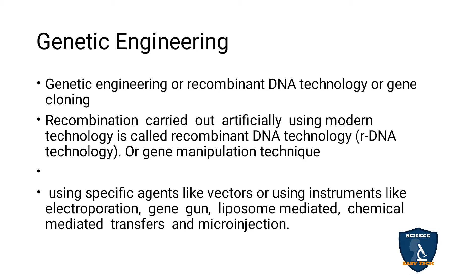How is rDNA technology done in the laboratory artificially? By using specific agents — vectors — and instruments like electroporation, gene gun, liposome-mediated transfer, chemical-mediated transfer, and microinjection. These are the instruments and vectors used in genetic engineering or recombinant DNA technology.